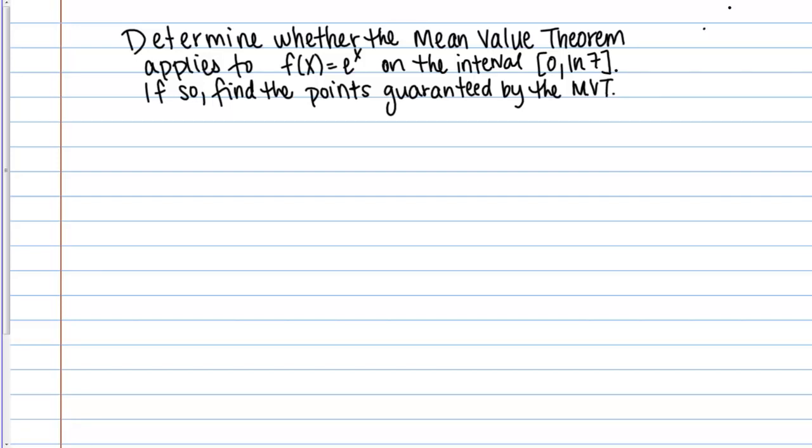Let's work through a mean value theorem finding the C type of problem. Here are the directions. Determine whether the mean value theorem applies to F of X equals E to the X on the closed interval from 0 to natural log of 7. If so, find the point or points guaranteed by the mean value theorem.